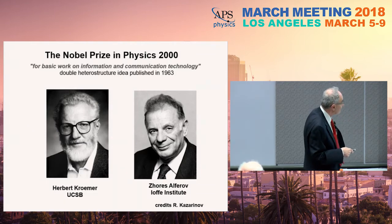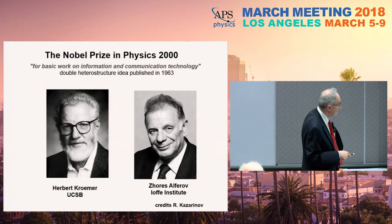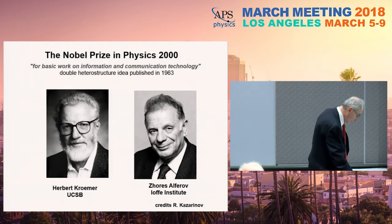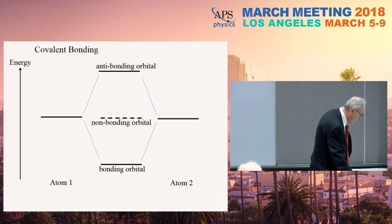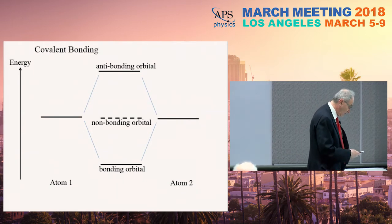It was done simultaneously in the Soviet Union and in the USA. Zhores Alferov, the Nobel laureate from St. Petersburg, credits his co-worker Rudy Kazarinov for actually introducing him to the idea. Now I'm going to explain why we need a double heterostructure and what great things it does.